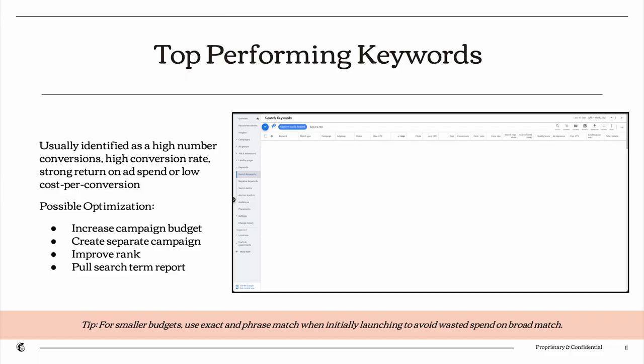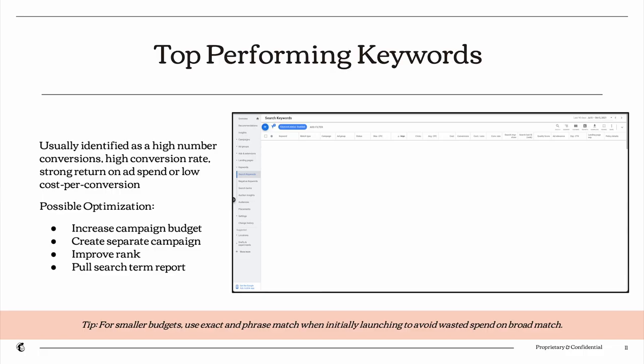Another optimization option is improving your rank. If you're having quality score issues, look at your expected click-through rate, ad relevance, and landing page experience. If any are average or below average, consider running an ad copy test to improve your click-through rate and ad relevance. For landing page issues, test different landing pages rather than driving to a generic homepage or category page. You can also review search term reports to find high-performing queries you should add as keywords to your account.